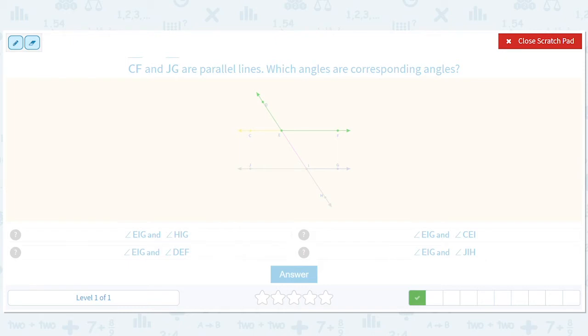What are the corresponding angles? EIG and HIG. So the first one is EIG. EIG and DEF? Yes. EIG and DEF? Yes. EIG and CEI? No. Those don't correspond. And EIG and JIH? No.